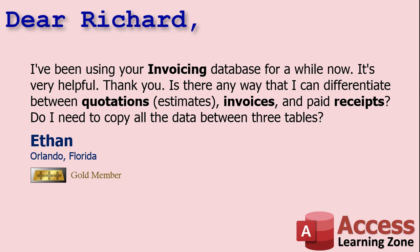No, Ethan. You can use the same order table that we use in the invoicing database to track all three things: quotations, invoices, and receipts. Quotations are basically sent to the customer when you're not sure if they're going to buy it. Then once they decide they want it, you change it over to an invoice — that indicates they owe you money. Then once they've paid, we switch the invoice over to a receipt. All you need is two yes/no fields: one to indicate whether it's a quotation, and the other to indicate whether it's paid. If it's not a quotation and it's not paid, it's an invoice. If it's not a quotation and it is paid, it's a receipt.